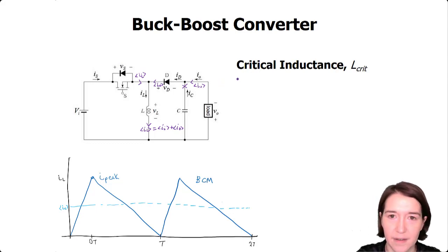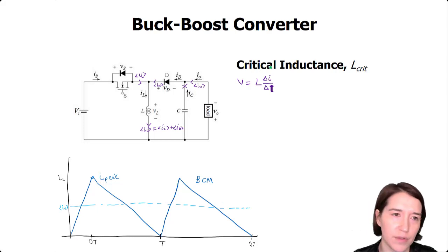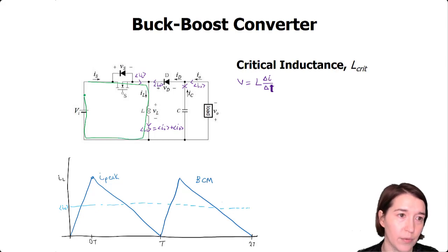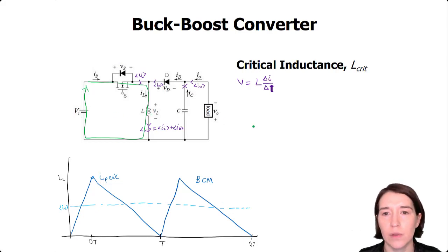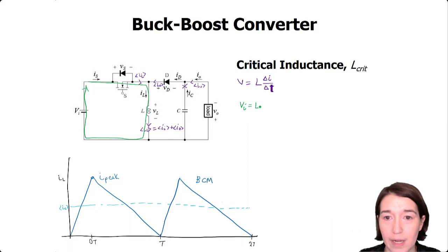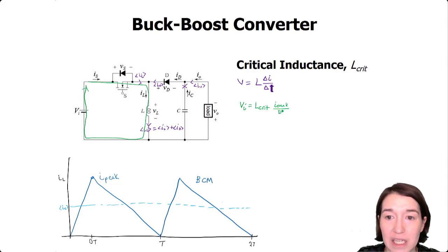Let's start with the inductor equation: V equals L times delta I over delta T, over one period. We're going to pick the switch-on phase, so that's when the switch is on, current is going through the inductor and through the input, meaning the voltage over the inductor is V_in. So we write: V_in equals L_crit times I_peak over dT.